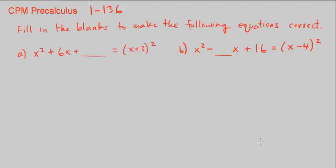This is CPM Pre-Calculus, Chapter 1, Number 136. Fill in the blanks to make the following equations correct. So for A, we have x squared plus 6x plus blank equals x plus 3 squared.